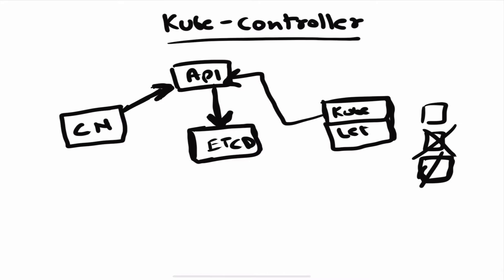That is all you need to understand about your controller manager. You don't actually need to go too deep — you just need to know the basic function and the key controllers available to you, like the pod controller, node controller, and replication controller. When we go to the terminal we'll see how they're configured in a minikube cluster.